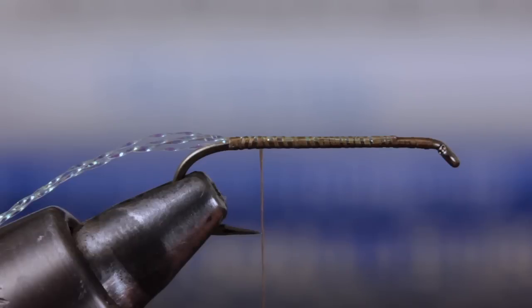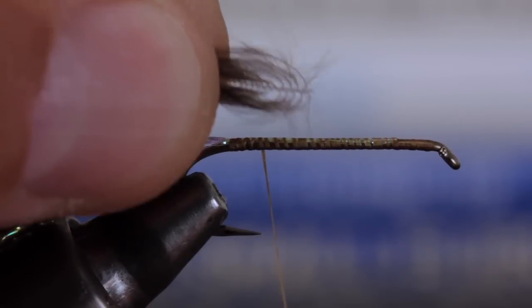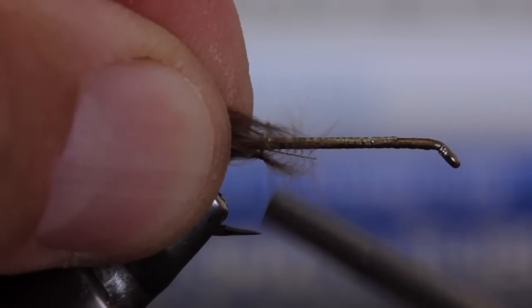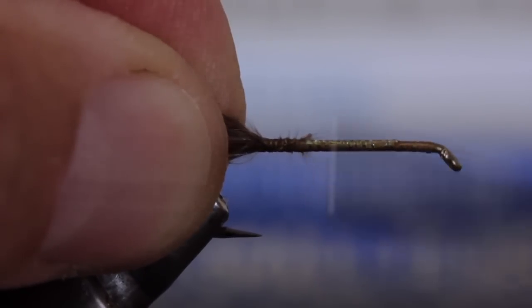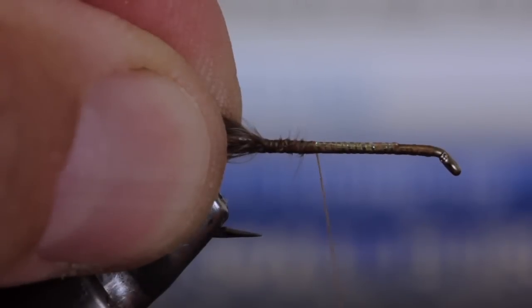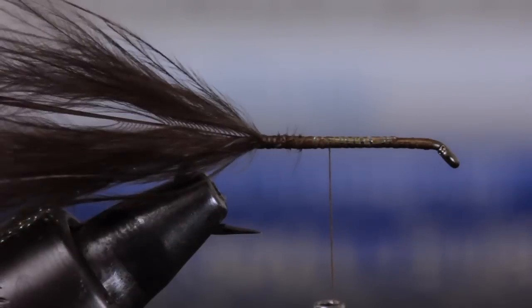While maintaining your grip, place the feather on the near side of the hook and take thread wraps to secure it. By securing the stem and a few fibers, the plume is less likely to break at the tie-in point. Advance your thread about a quarter inch up the hook shank.